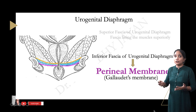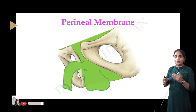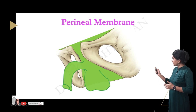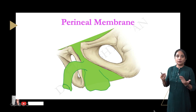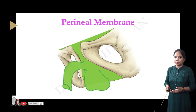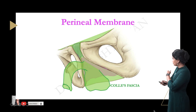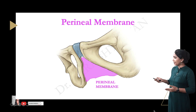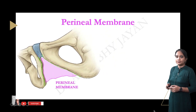The perineal membrane is located deep to Colles' fascia. Colles' fascia is attached to the edges of the ischiopubic rami, stretches across the skin of the scrotum and the penile fascia, and extends onto the anterior abdominal wall as the Scarpa's fascia. Once you remove Colles' fascia, you can see the perineal membrane on the inside. The perineal membrane is attached to the inner margins of the ischiopubic rami.